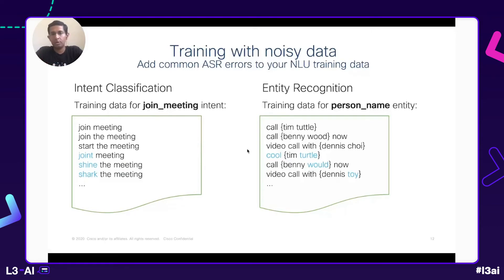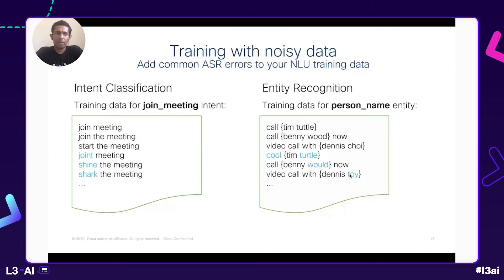You can follow a similar approach with your entity recognition models too — adding mistranscriptions like 'cool tin turtle' or 'video call with Dennis Toy' to your entity recognition training datasets. This approach, if executed correctly, works really well in practice and can greatly improve the real-world accuracies of your intent classification and entity recognition models. You need to make sure you don't go overboard: if you add every possible way an ASR can mistranscribe your queries, that will more likely confuse your model than help it. So what we do is only add examples of mistranscribed queries that are fairly common in our user logs, and we only add near misses — transcriptions that are slightly off — avoiding mistranscriptions that are garbled beyond recognition.